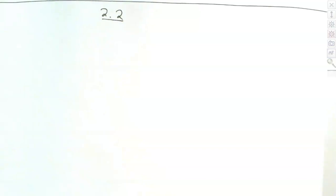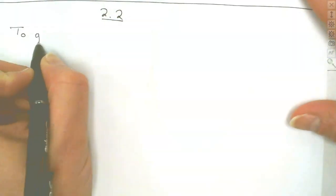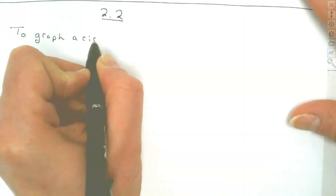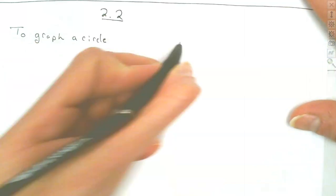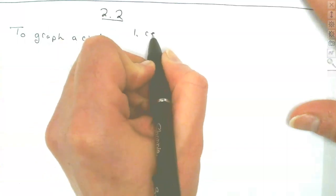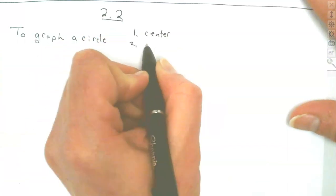We're going to be looking at circles now. To graph a circle, we need two things: we need a center and we need a radius.